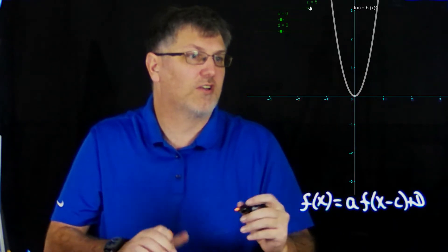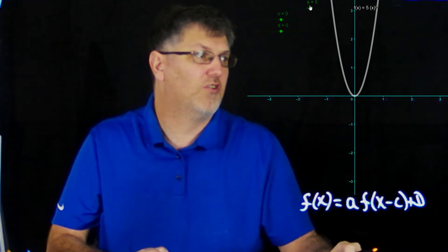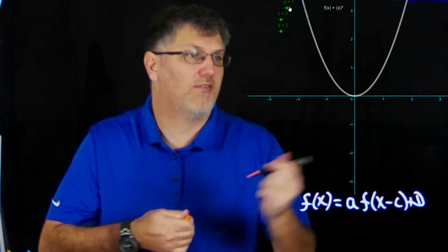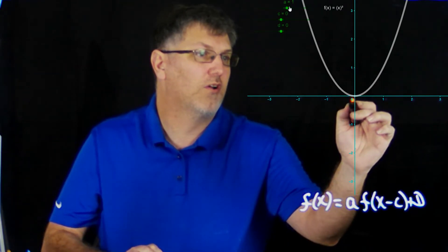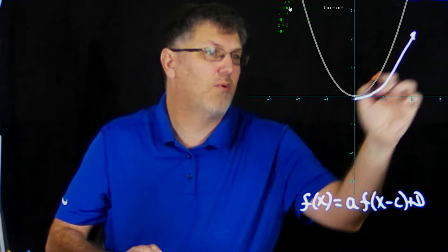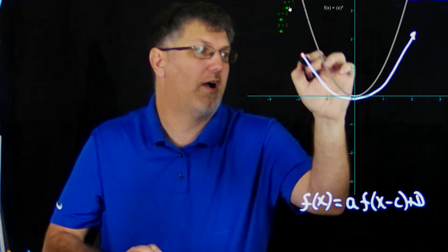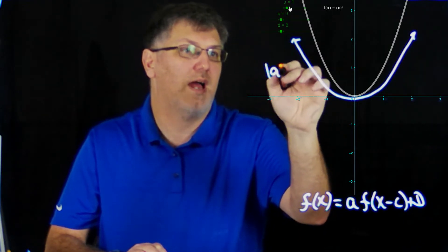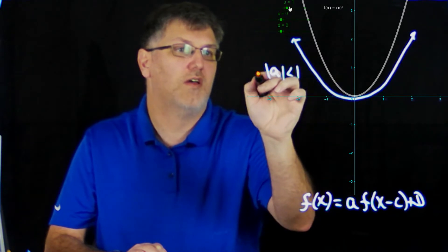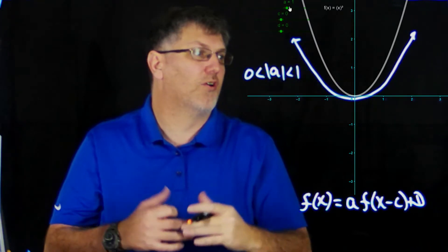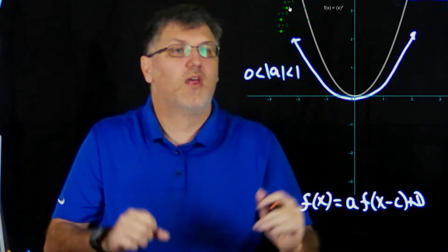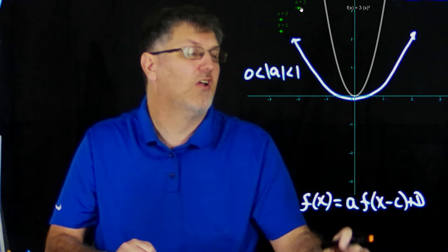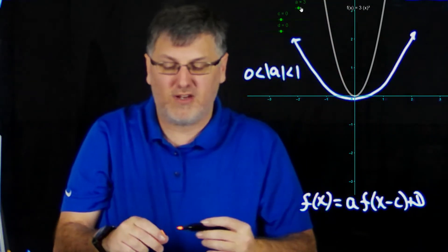If we want to look at something that would look a little different, if my a itself was less than 1, we have our original graph here, and it's going to make it much wider than the original. This is if the absolute value of a is less than 1 but greater than 0. So it makes it wider, whereas whenever my a is larger than 1, it stretches it this way, so it actually makes it skinnier.